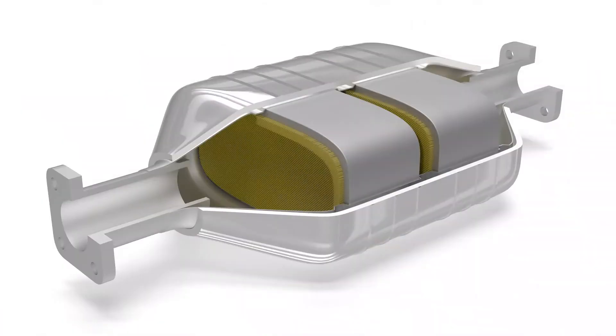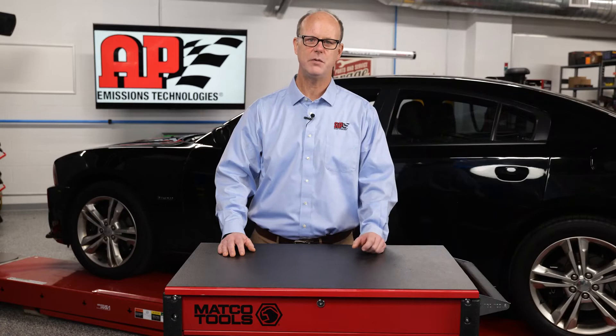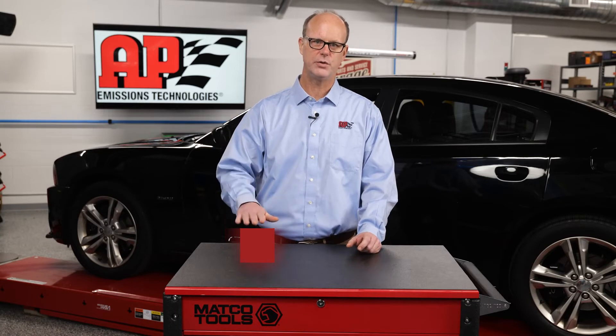When unburned fuel enters the converter it gets burned up. If you add too much unburned fuel, the converter will move past its thermal operating limits and the precious metals in the catalyst formulation will pool together in a process referred to as sintering or metal migration. When those precious metals are pooled together, you've got fewer locations available for that catalytic reaction to take place, and the total amount of pollution the converter can remove is drastically reduced.